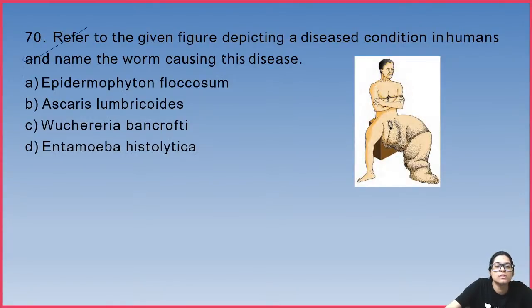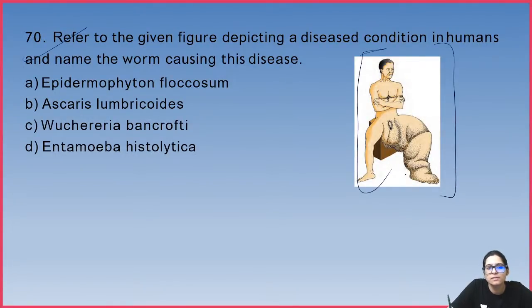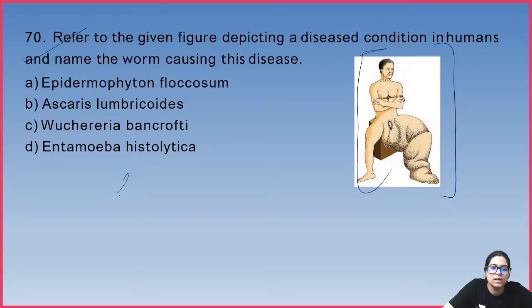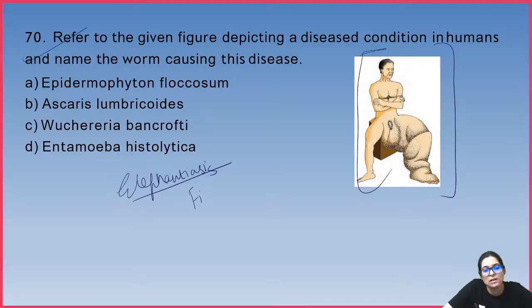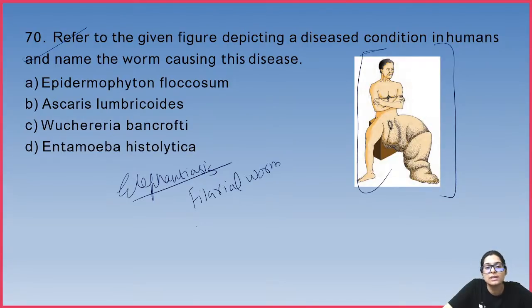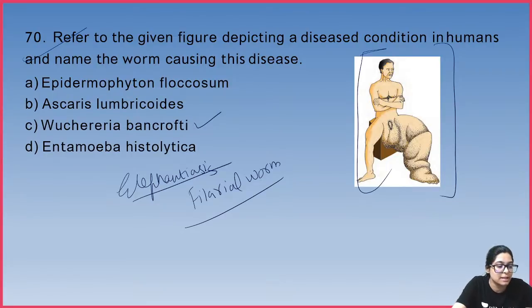Question 70: this diagram indicates elephantiasis, which is caused by the filarial worm — Wuchereria bancrofti or Wuchereria malayi.